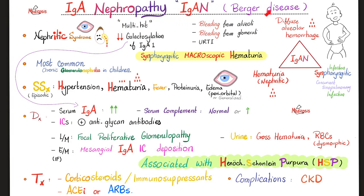Now today's topic: IgA nephropathy. It's a multi-hit disease — many things have to go wrong to develop it. It's a nephritic syndrome for the most part. There is decreased galactosylation of IgA1, which causes accumulation of IgA — it's high in the serum, high everywhere, and that's why it ends up depositing in the mesangium. IgA nephropathy typically presents as a child with hemoptysis (bleeding from the alveoli) and hematuria (bleeding from the glomeruli), following an upper respiratory tract infection — concurrent or at least 1 to 2 days later. We call this synpharyngitic macroscopic hematuria.